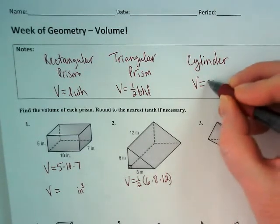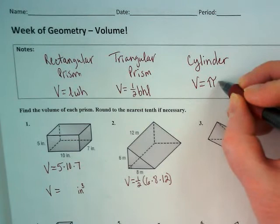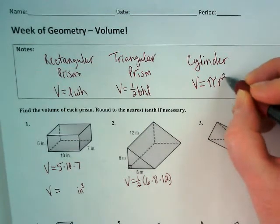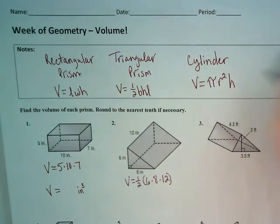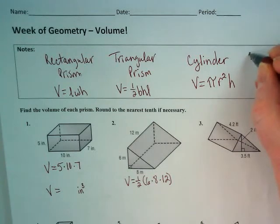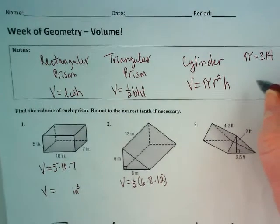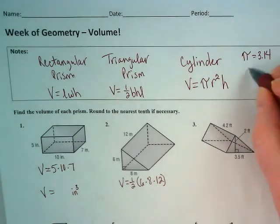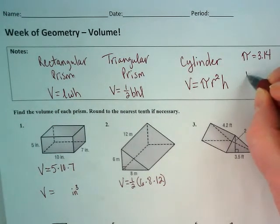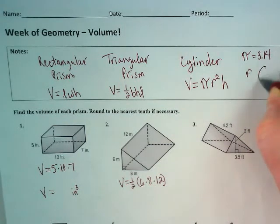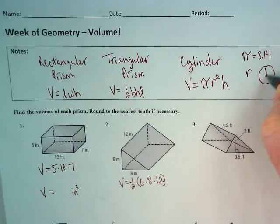Volume of a cylinder equals pi times the radius squared times the height. Remember pi equals 3.14 as an approximate where we've rounded. And radius is not the one that goes all the way across the circle, but the one that goes halfway across.